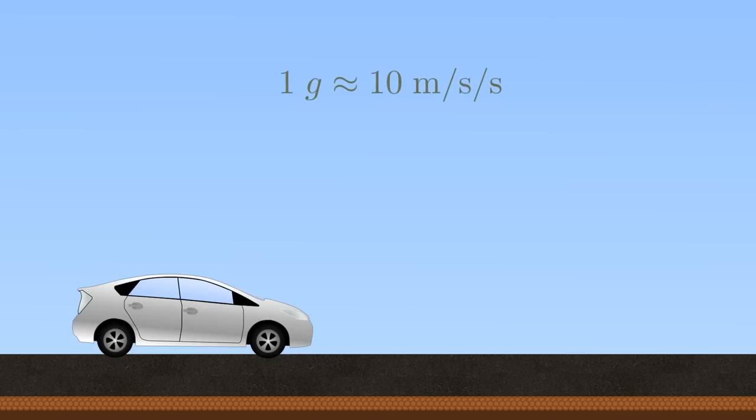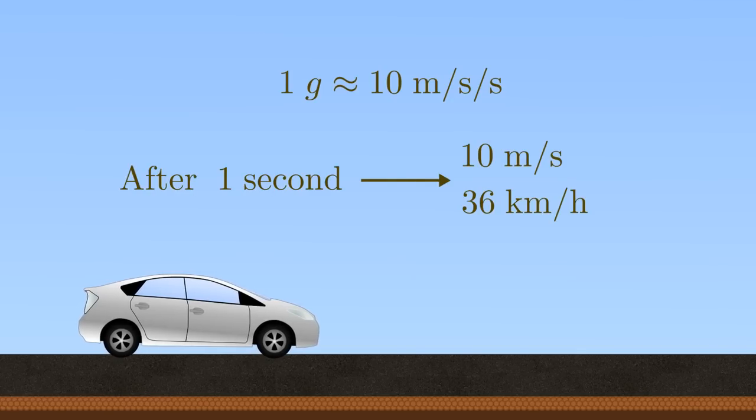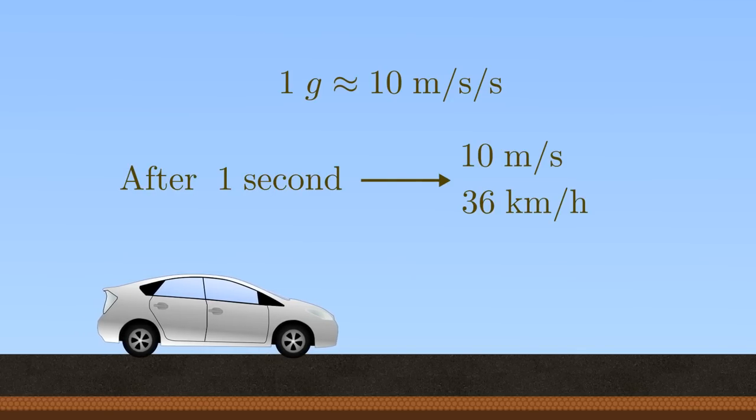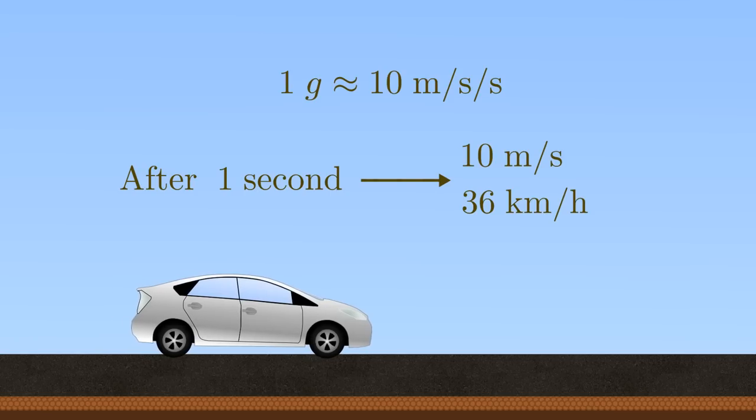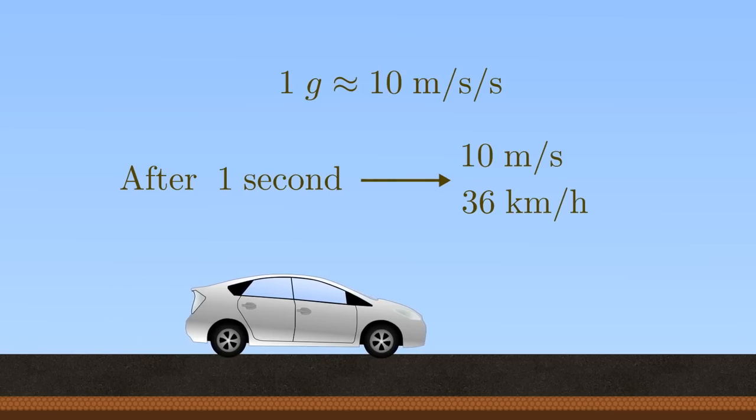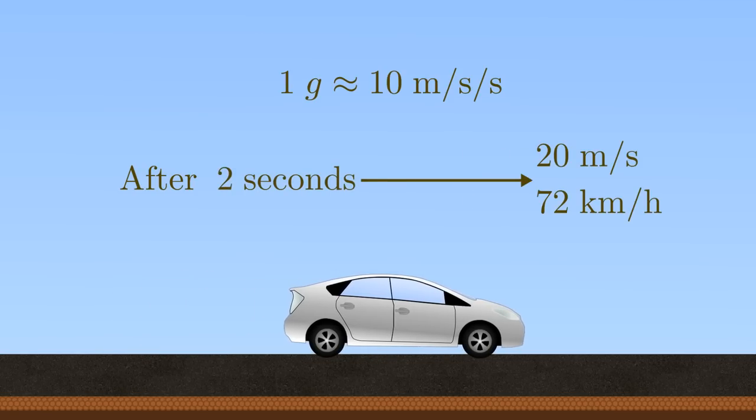Mathematically, an acceleration of 1g means increasing your speed by 10 meters per second every second, or going from 0 to 36 kilometers per hour in 1 second. So for example, after 1 second your speed would be 10 meters per second, 20 meters per second after 2, and so on.